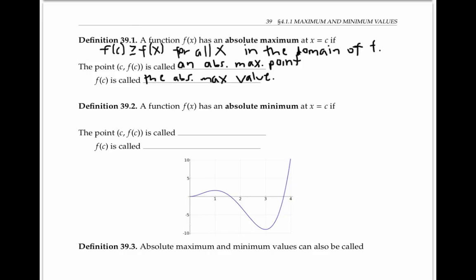If I draw a graph of f, the y value f of c is the highest value that the function ever achieves, and an absolute maximum point is a point where it achieves that maximum value. It's possible for a function to have more than one absolute maximum point if there's a tie for the highest value, but a function has at most one absolute maximum value.